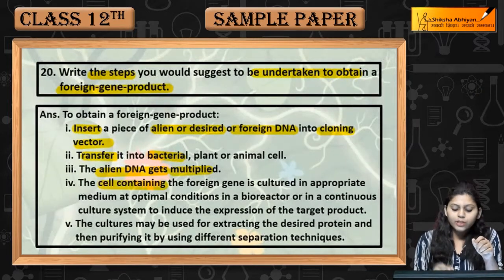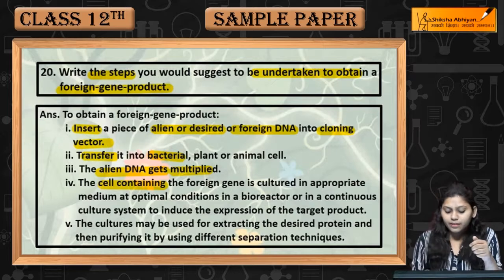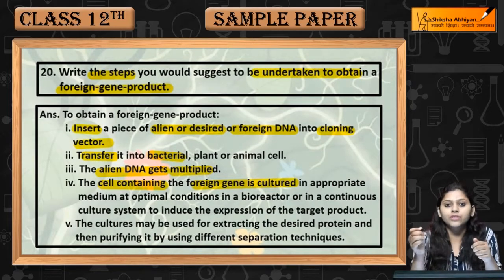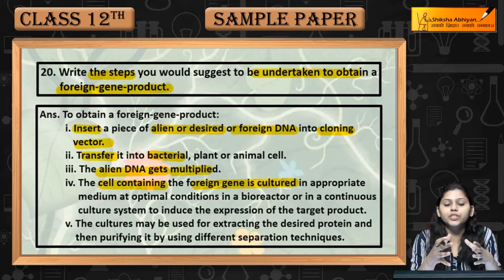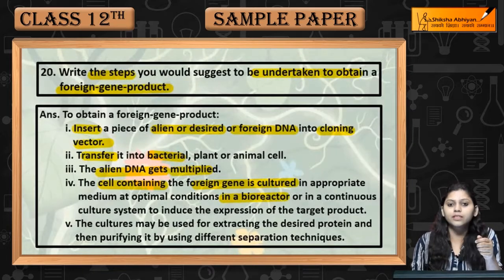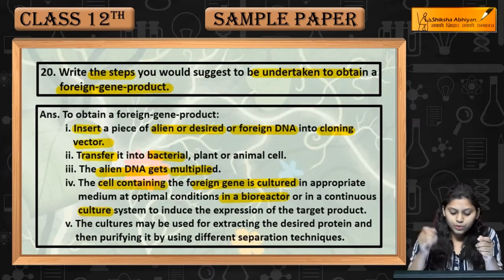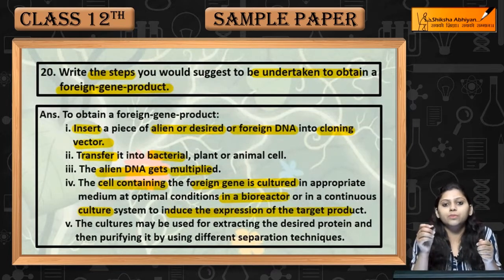In the cell, we will send it to culturing. The foreign gene is cultured under optimal conditions — temperature, pressure, and nutrients — in a bioreactor or in a continuous culture system, to induce the expression of the target gene product.